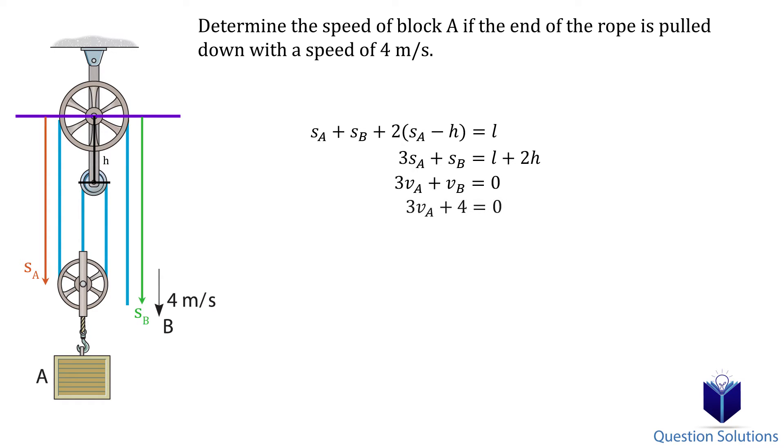The velocity of B is given to us, which is 4 meters per second. So let's plug it in and solve for VA. Solving gives us negative 1.33 meters per second or 1.33 meters per second upwards.